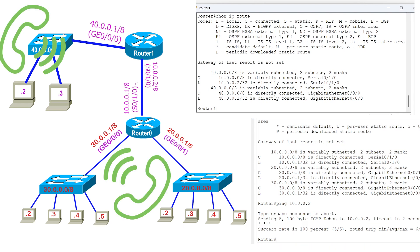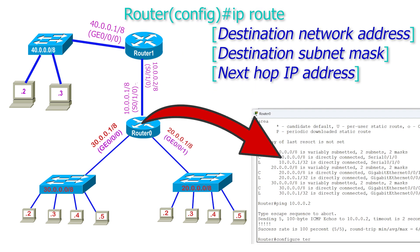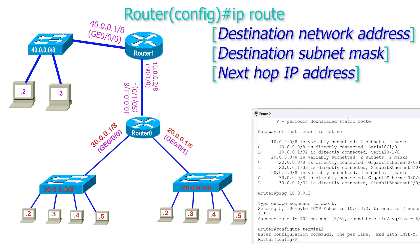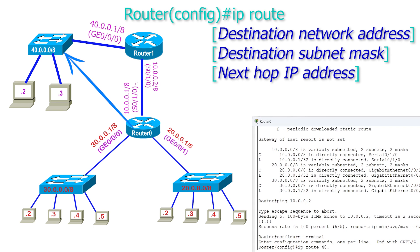If we want to enable communication between subnets connected to different routers, we have to add their routes to the routing table. The ip route command in global configuration mode adds or updates a static route. It needs three parameters: the destination network, subnet mask, and next hop IP address. The destination network and subnet mask define the subnet available on another router. The next hop IP address is the IP address configured on another router's interface connected to this router.